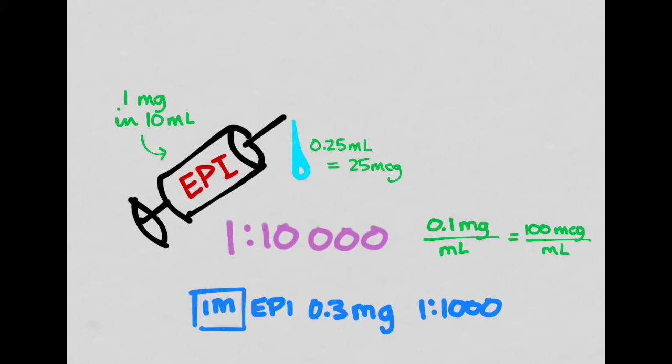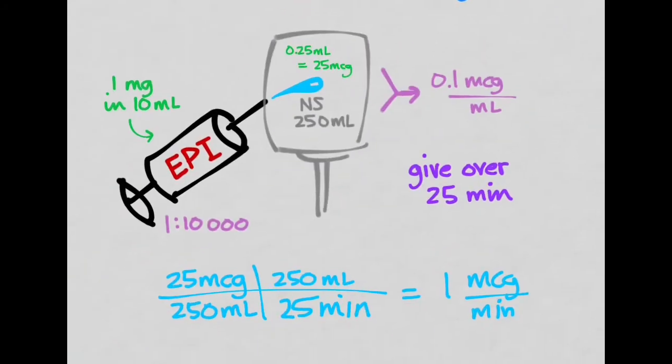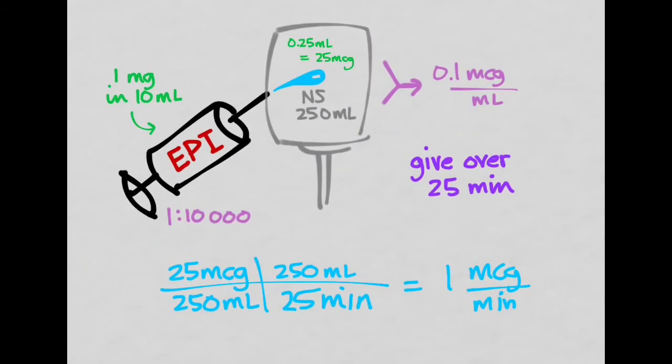Now, if you want to give the IM dose, you're going to use something that's a little bit more concentrated, the 1 in 1,000. You're going to give 0.3 mg IM, usually in the deltoid. And if they're still not doing too hot, then you might want to start them on an epi drip. And the dose you're going to want to give is 1 microgram per minute. And just have the pharmacy make it up. I drew a little picture here if you want to pause it, but I'd rather you just have the pharmacy do it.